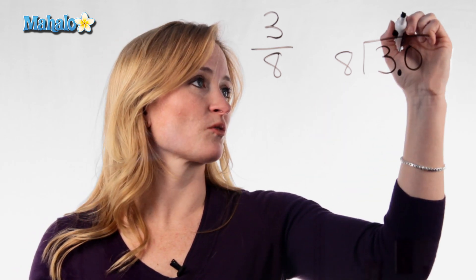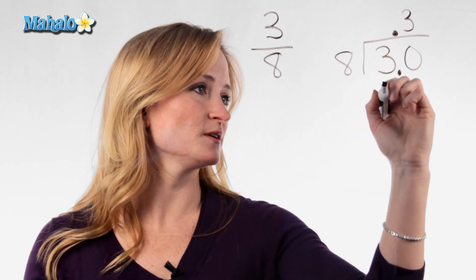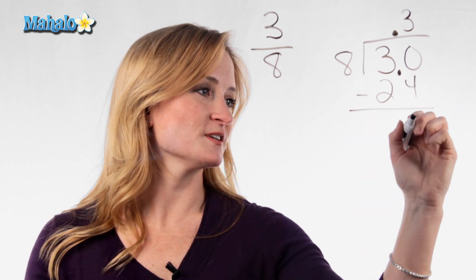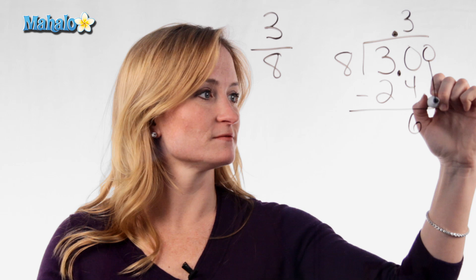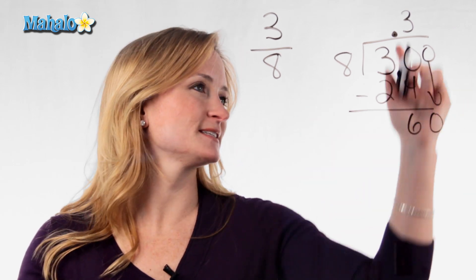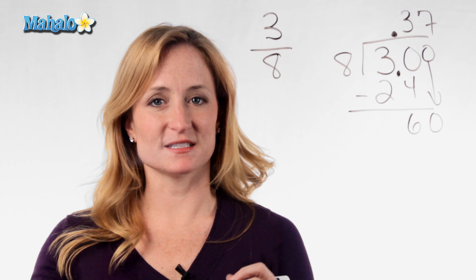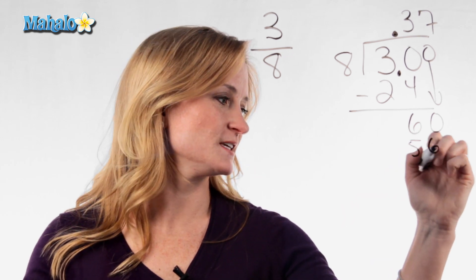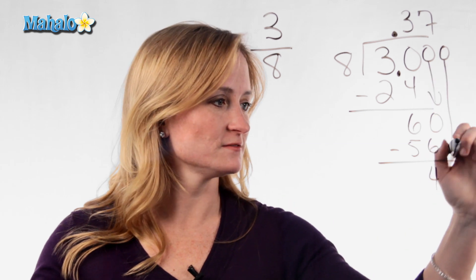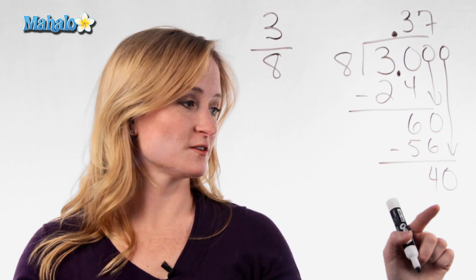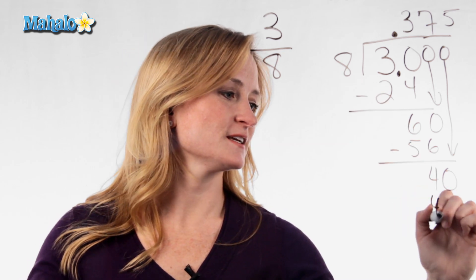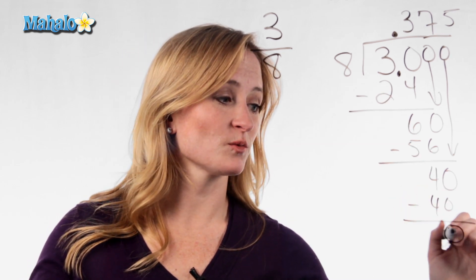8 goes into 30, 3 times. 8 times 3 is 24, and 30 minus 24 is 6. You can add another 0, so it becomes 60. 8 goes into 60, 7 times, and 7 times 8 is 56. Subtract that and we have 4. Add yet another 0 — 8 goes into 40, 5 times. 5 times 8 is 40, and this time when we subtract, we have nothing left over.